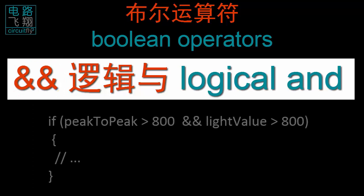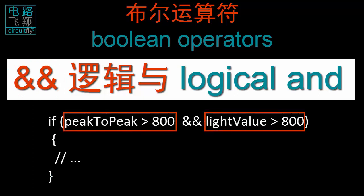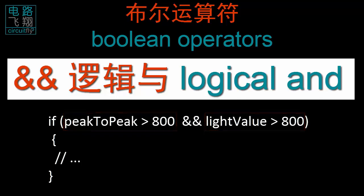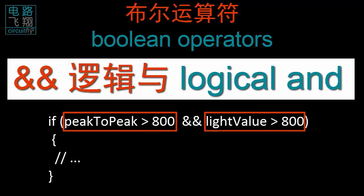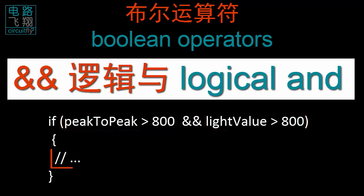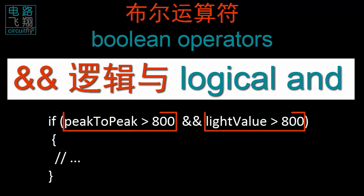举例来说，有if语句：if pick to pick大于800，逻辑与，light value大于800。只有当这两个条件同时满足时，逻辑与运算的结果才为真值，if结构中的程序才被执行。任意一个条件不满足，逻辑与运算的结果都会为假值。